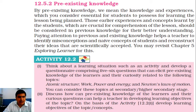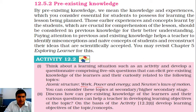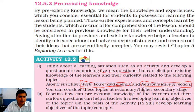There are two activities for you to consider. First, think about a learning situation and develop a questionnaire comprising 5 to 6 questions that can elicit pre-existing knowledge and curiosity from learners relative to the following topics: work, power and energy, and Newton's laws of motion. Suppose you are going to teach these topics in a classroom — what five to six questions can you ask to identify the students' pre-existing knowledge?